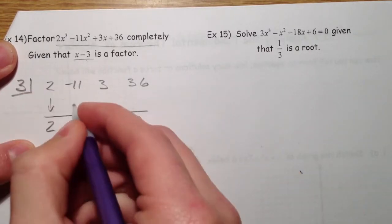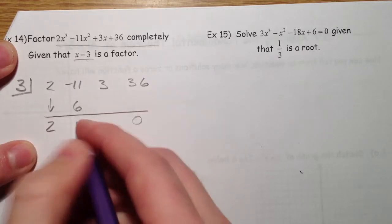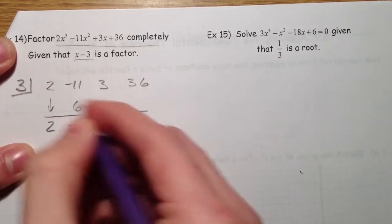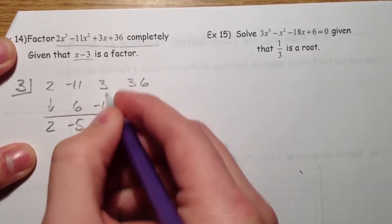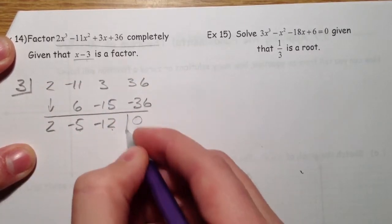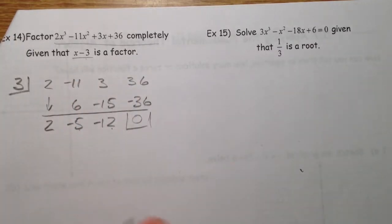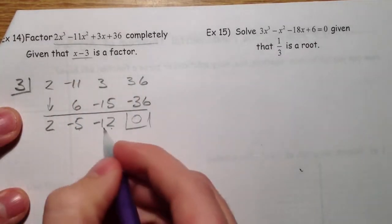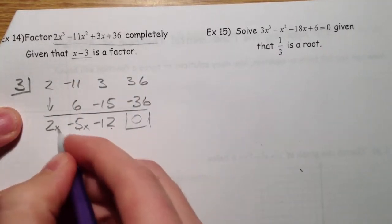Drop the 2 down. 2 times 3 is 6. Add, negative 5. Multiply, negative 15. Add, negative 12. And multiply, negative 36. So, we have negative 12, negative 5x, x squared.